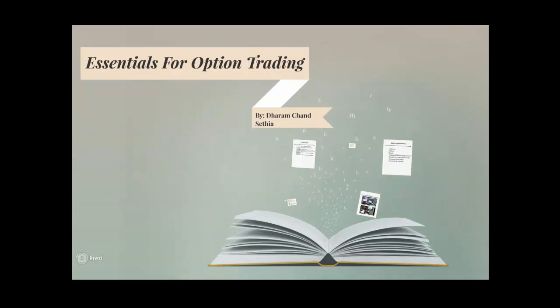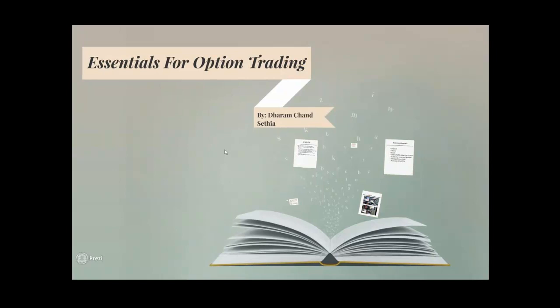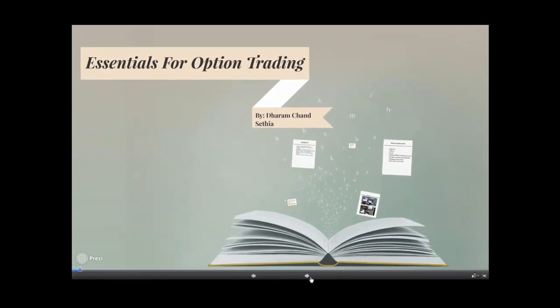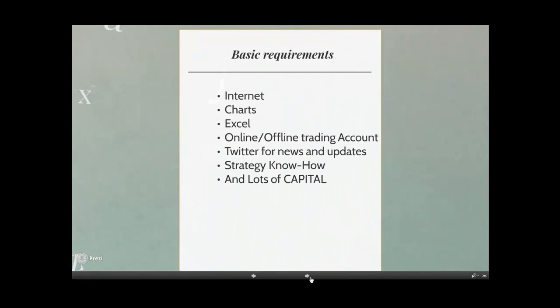Let me come to the basic requirements that any person as a trader requires. The few things you need in order to create a very good setup for options trading are: you should have a very good internet, charts, Excel sheets, an offline or online trading account, access to Twitter for news and updates, strategy know-how, and of course lots of capital.